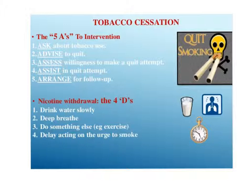There are the Five A's for smoking cessation: Ask about tobacco use, Advise to quit, Assess the willingness to make a quit attempt, Assist in the quit attempt, and Arrange for follow-up. For nicotine withdrawal, the Four D's are: Drink water slowly, Deep breathe, Do something else such as exercise, and Delay acting on the urge to smoke.